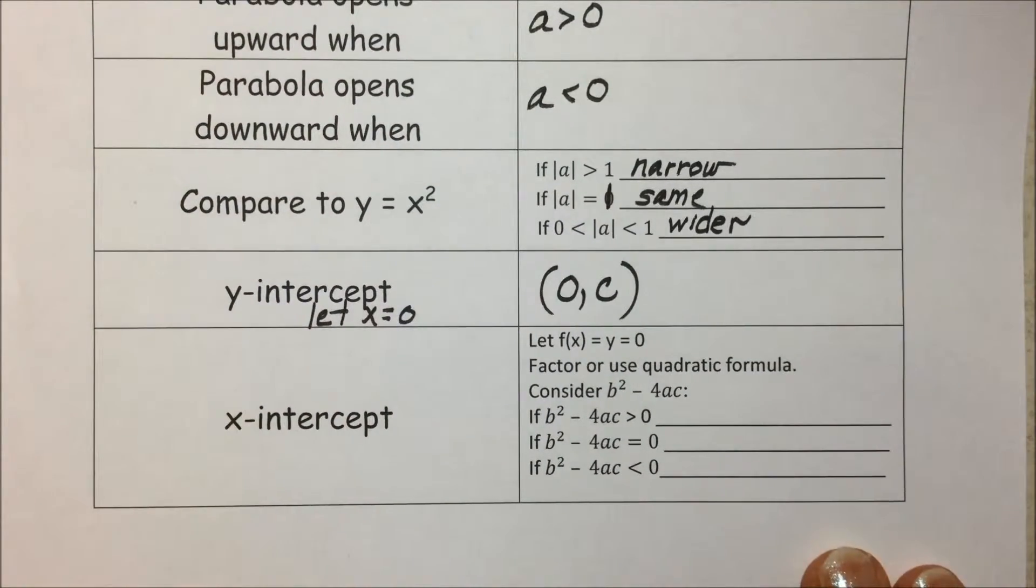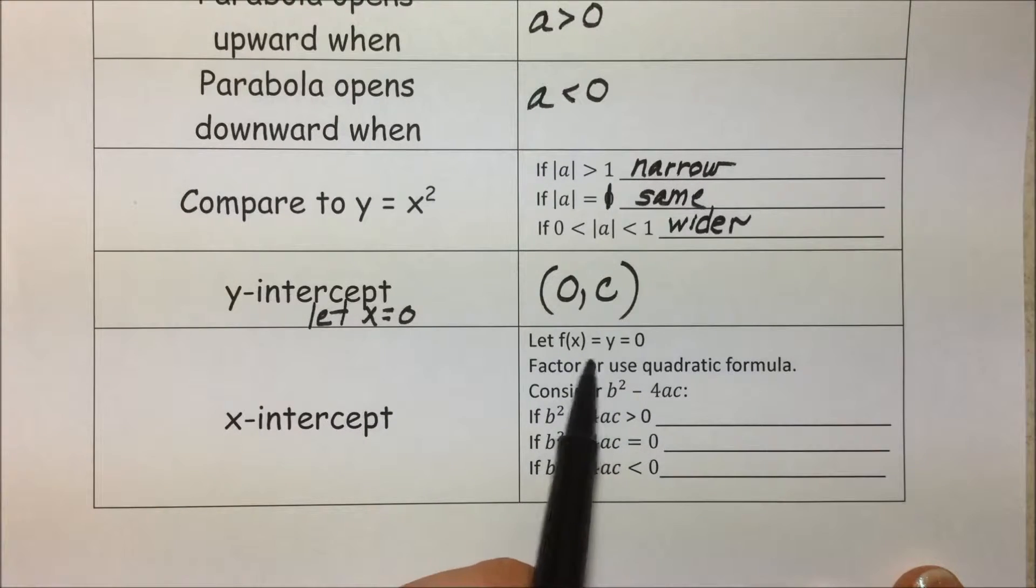To determine our x-intercepts, where the parabola will cross the x-axis, it can cross in several possibilities or not at all.